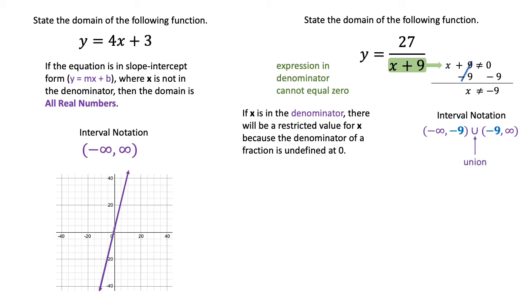You also use a union symbol to indicate that everything else, except for that negative 9, exists in the domain of that function. So what I'm going to do is show you the graph just so that you can see. Again, you do not have to graph this at all. All you have to do is identify the restricted value and write that in your interval notation.